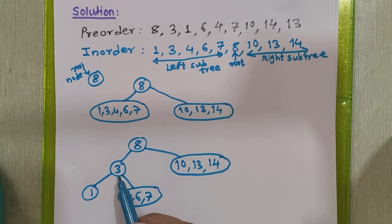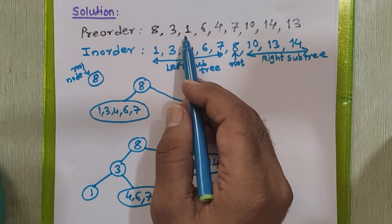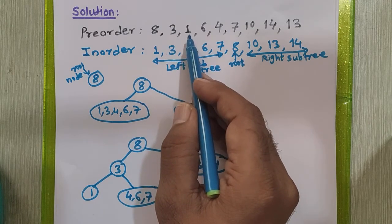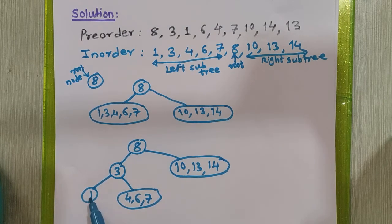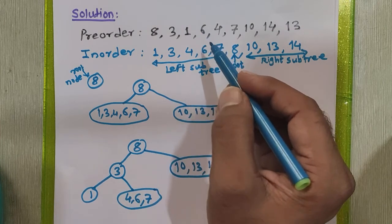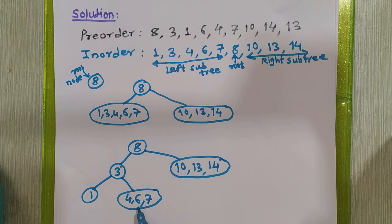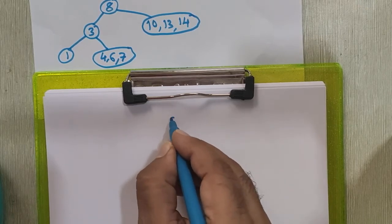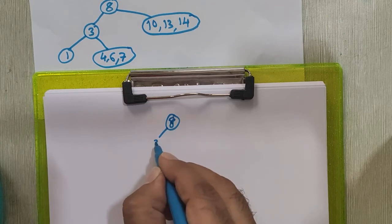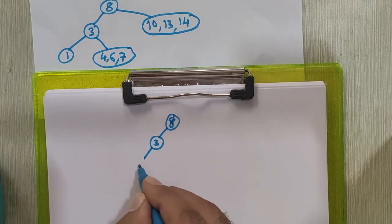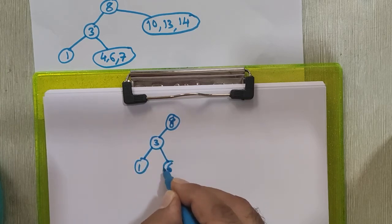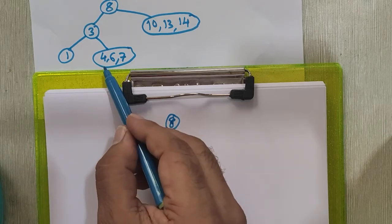After placing 3, the next root in the pre-order sequence is 1. In the diagram 1 is a single value so it is already placed. The next root is 6. Checking the in-order diagram, 4 appears on the left of 6 and goes to the left subtree, while 7 appears on the right and goes to the right of node 6. So 4 is the left child and 7 is the right child of root node 6.